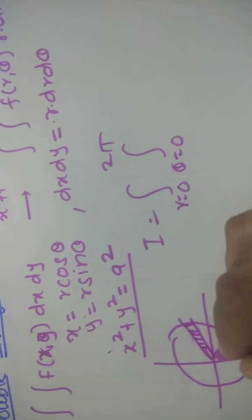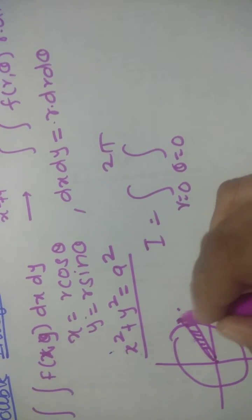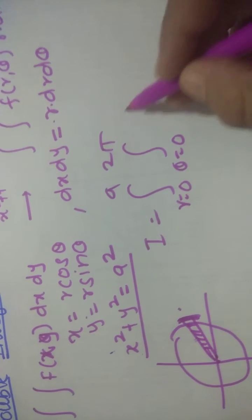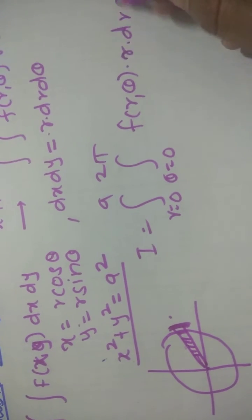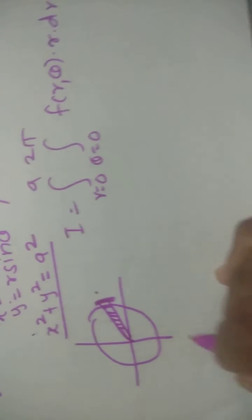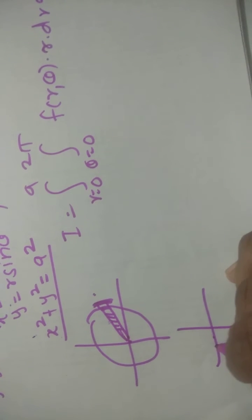And r varies from 0 to the radius of the circle, that is nothing but a. And this is f of r, theta times r dr d theta. Now suppose you have only half circle, right half part of the circle.